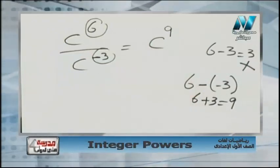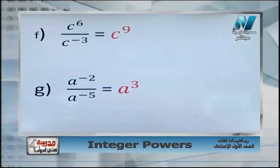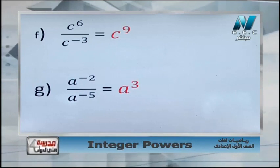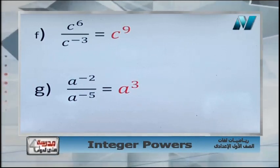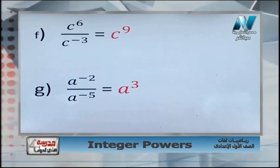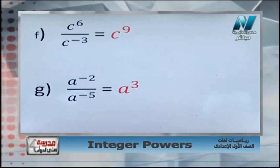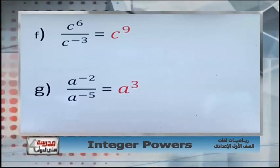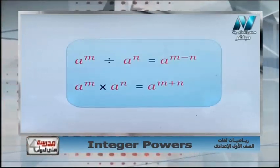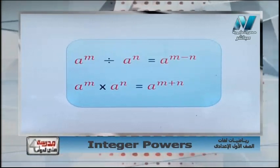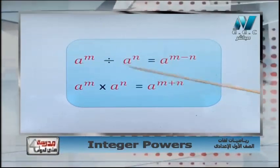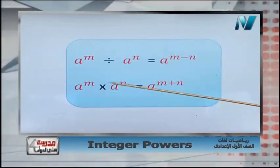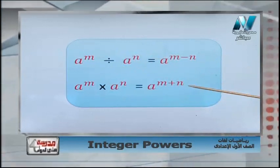Next: a power negative 2 over a power negative 5. Same base a and a — subtract the powers: negative 2 minus negative 5 equals negative 2 plus 5, which equals 3. So the answer is a power 3. Our rules: if we divide same bases, subtract the powers m minus n; if we multiply same bases, add the powers m plus n.